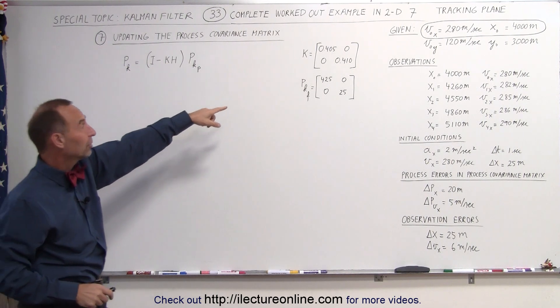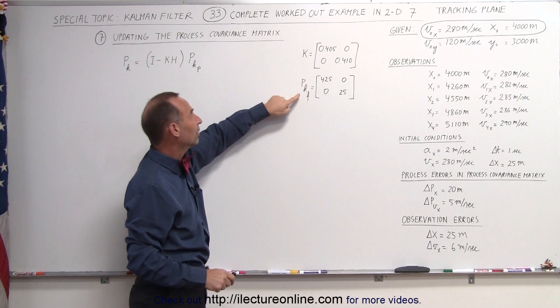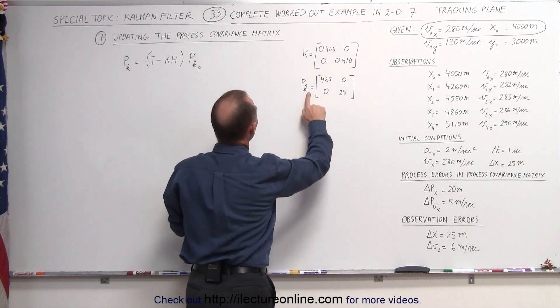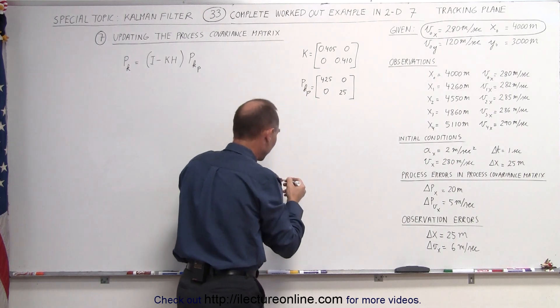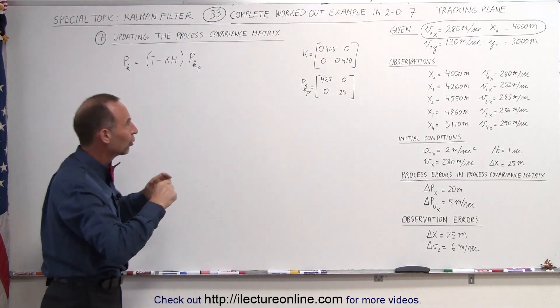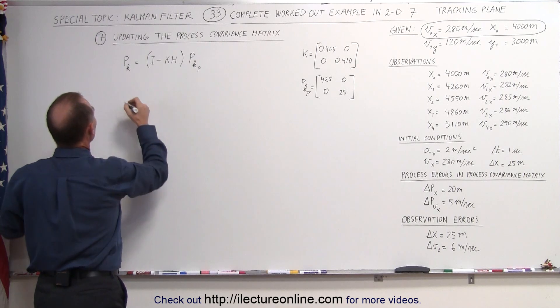Just so that we remember, this is what the Kalman gain was, and this is what the - this is not a sub f, this should be a sub p - this is the predicted process covariance matrix from the previous go-around. Plug the numbers in and see what we get.